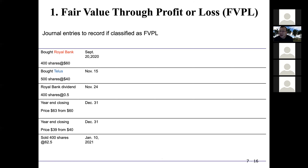Let's take a look at how this works with an example. Suppose a company bought Royal Bank shares — 400 shares on September 20th, 2020, each share costing $60. What's the journal entry? You debit FVPL Royal Bank investment and credit cash for $24,000. These are the shares — it's a non-strategic investment, so it's FVPL. 400 shares times $60 per share equals $24,000.